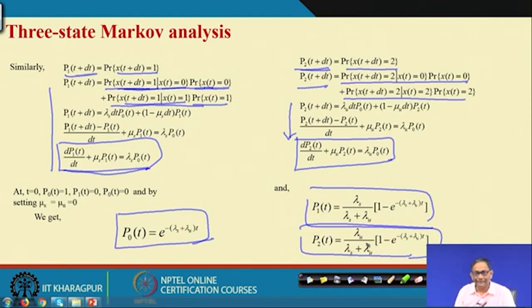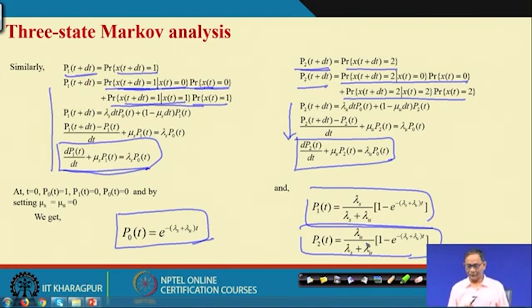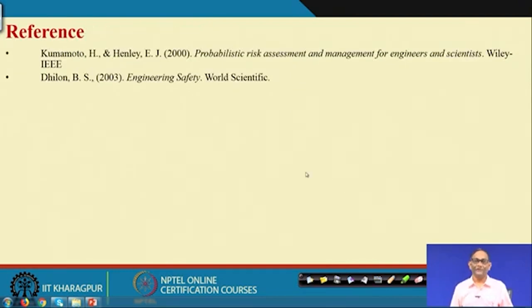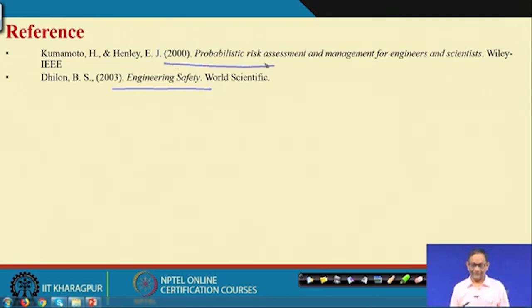The situation may involve 4 states or n states, and you can use Markov chain analysis to find different probability parameters for components under consideration. The 3-state example is taken from one reference book and the 2-state example from another; overall Markov analysis theory is covered in those books, and for the solution approach you may refer to a differential equations textbook. Thank you very much.